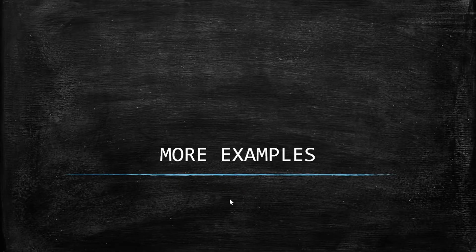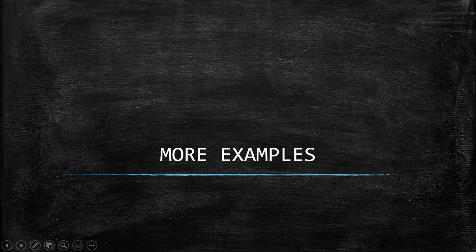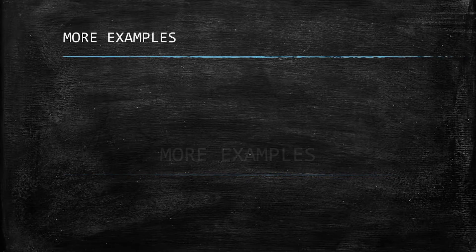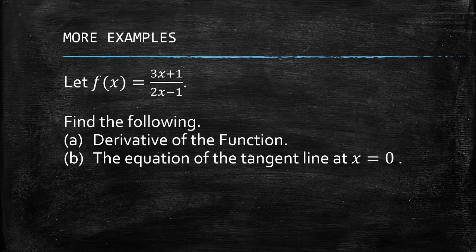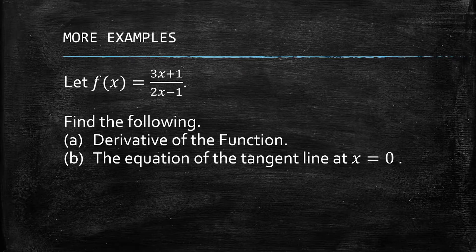Welcome back to lesson 9. We're now in the last part of this lesson, and we'll be having more examples. Let's start with example number one. We have the function f(x) = (3x + 1) / (2x - 1), and we are asked to find the derivative of the given function. Take note: we're not going to use the limit definition anymore, but rather we are going to apply the basic differentiation rules.